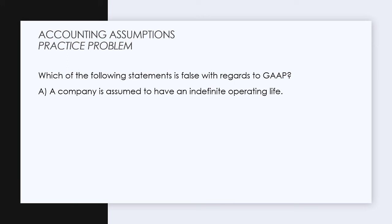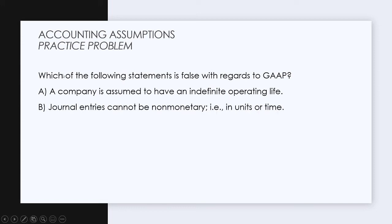A going concern means the business is going to continue indefinitely, so we assume it will have an indefinite operating life. This is a true statement, so this would not be the correct answer. Answer B: journal entries cannot be non-monetary in units and time. That's true — journal entries are always in dollar values, which is the monetary unit assumption.